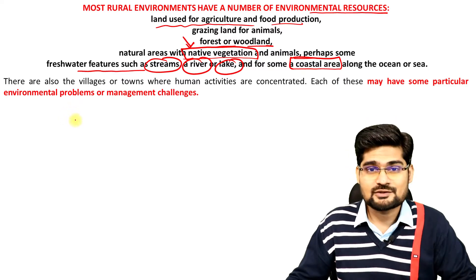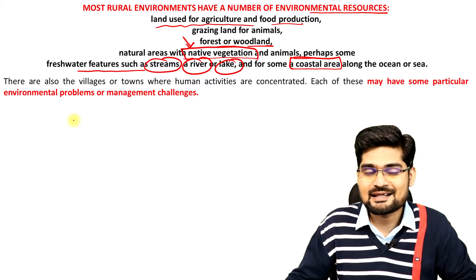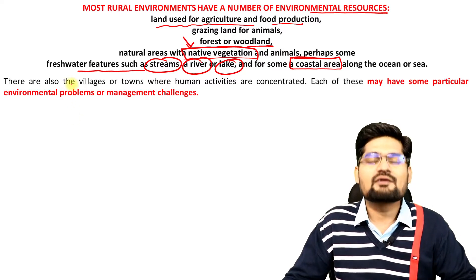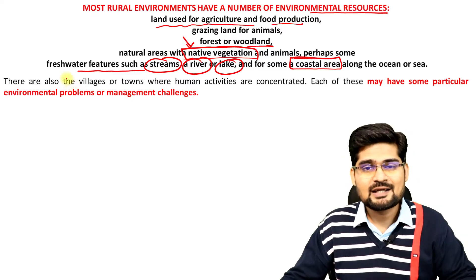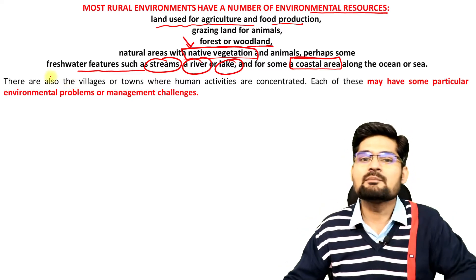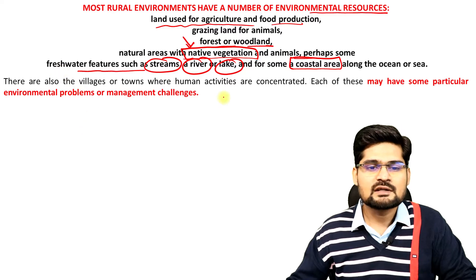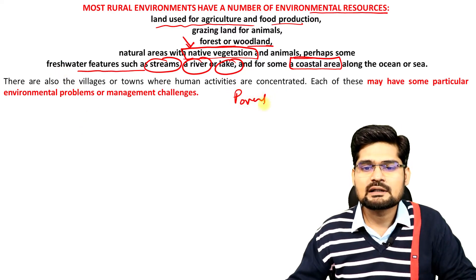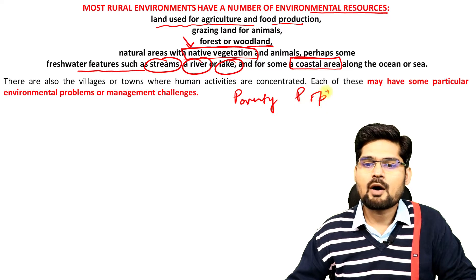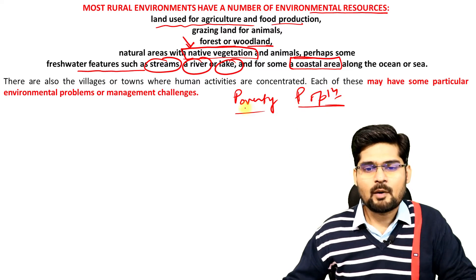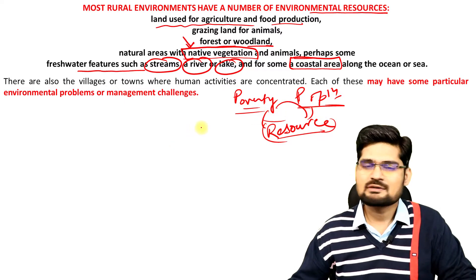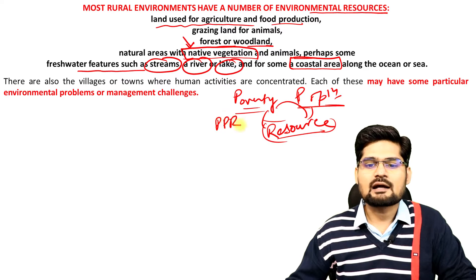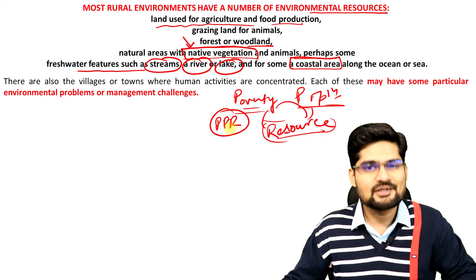What is happening to these resources is the concern here. With growing population, the need for resources also grows at the same time, so there is pressure on resources. There is a linkage between three important factors — what we call the PPR: population, poverty, and resource relationship. Poverty, population, and resource are intricately linked.